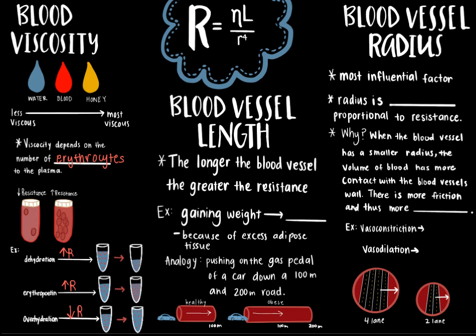The next factor that affects resistance and blood flow is blood vessel length. Resistance in blood flow through a vessel is directly proportional to the length of the blood vessel: the longer the blood vessel, the greater the resistance, and the lower the blood flow. An example of when blood vessel length increases is when people gain excessive weight and become obese. Due to the increased vascularization of the adipose tissue, blood vessel length increases and blood has to be moved even farther than normal, which the heart may or may not be able to accommodate.